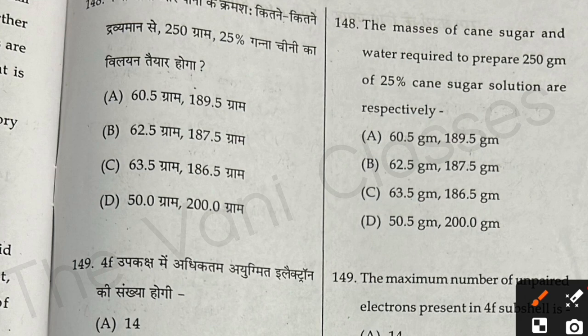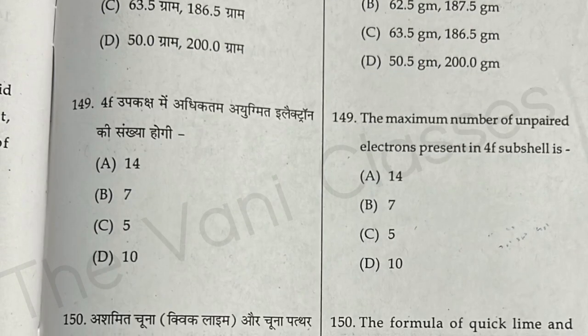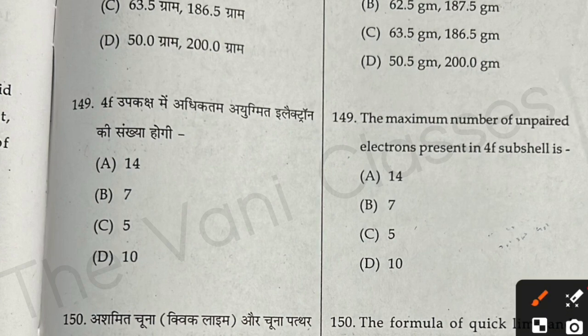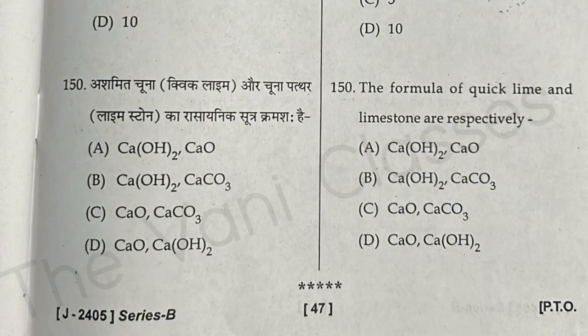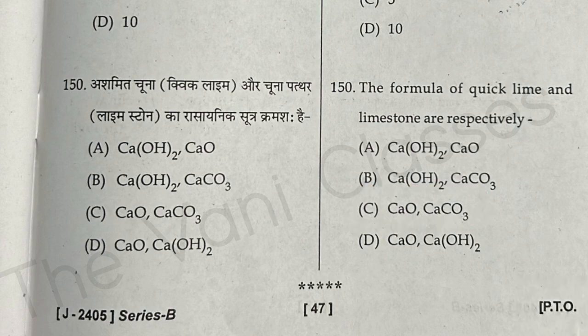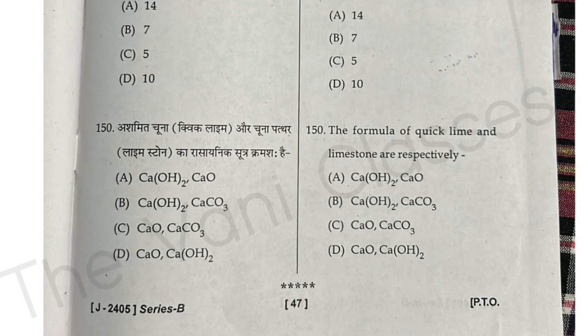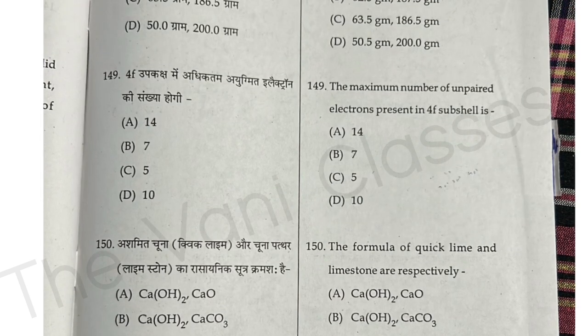Question 148: The masses of cane sugar and water required to prepare 250 grams of 25% cane sugar solution are respectively 62.5 grams and 187.5 grams — option B. Question 149: The maximum number of unpaired electrons present in the 4f subshell is 5 — option C. Question 150: The formulae of quick lime and limestone are respectively CaO and CaCO3 — option C. That's all for this video. Thank you so much for watching, bye bye, take care.